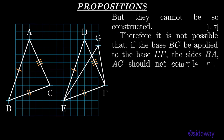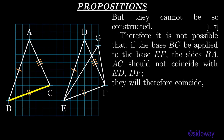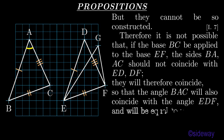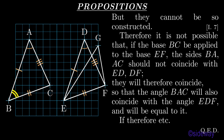Therefore it is not possible that, if the base BC be applied to the base EF, the sides BA, AC should not coincide with ED, DF. They will therefore coincide, so that the angle BAC will also coincide with the angle EDF and will be equal to it. What was to be shown.